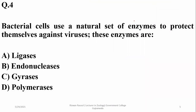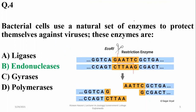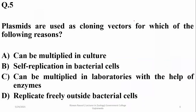Bacterial cells use a natural set of enzymes to protect themselves against viruses; these enzymes are restriction endonucleases, or molecular scissors. But artificially, these enzymes have been used in laboratories to cut various types of DNA. Plasmids are used as cloning vectors because they are self-replicating in bacterial cells.